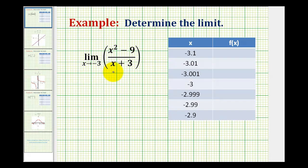We want to determine the given limit numerically, which means we want to complete a table of values where we have values to the left and right of negative three that approach negative three.